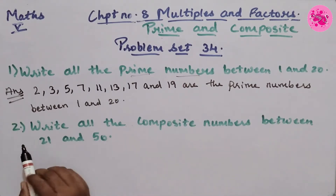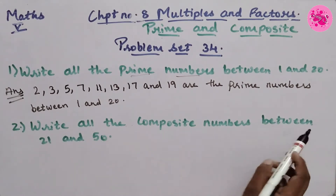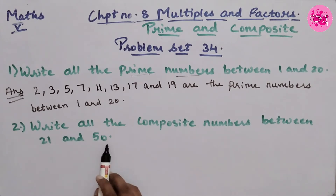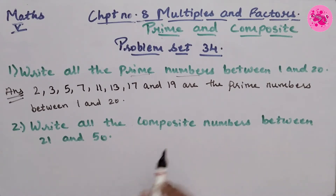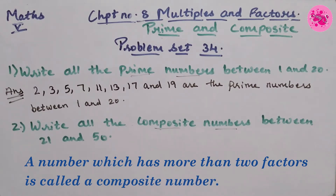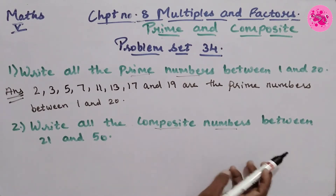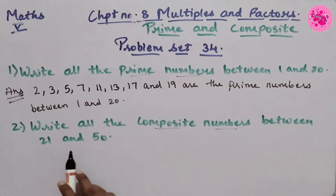Now let's move to question number 2: Write all the composite numbers between 21 and 50. So before writing the answer, let's recall what a composite number is. A number which has more than two factors is called a composite number. So numbers which have more than two factors are called composite numbers, and we have to write these between 21 and 50.